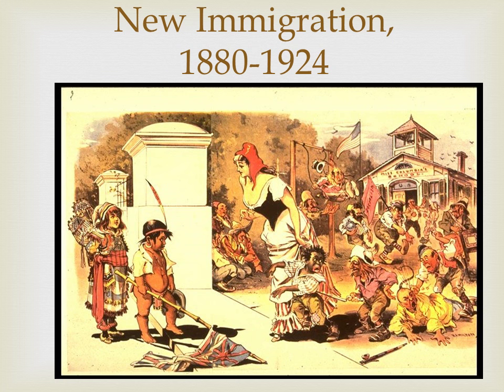As you guys know, I like to use images, especially political cartoons. They really convey ideas quickly and get into the time period. Here's a cartoon from the 1890s that I would consider very ambivalent — ambivalent means it could go either way. Here you have the United States portrayed as a schoolhouse.